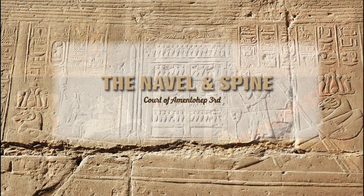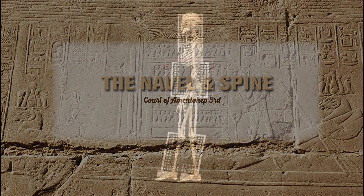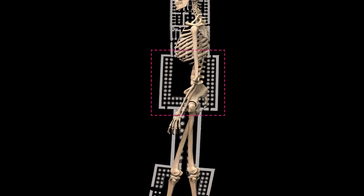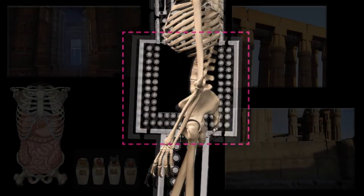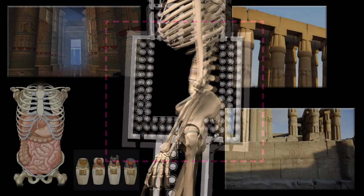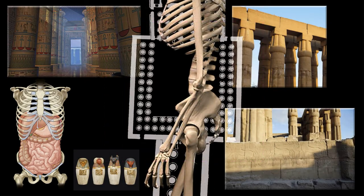Now we pass into the court of Amenhotep the Third, which corresponds to the viscera and the spine. The viscera are all the internal organs below the heart and lungs. This is really the chemical factory where our physical food and liquid intake is processed to create the chemicals stored in the liver, which are then issued to the rest of the body. It is also where those foods are converted into the energies for us to move, think, and feel.